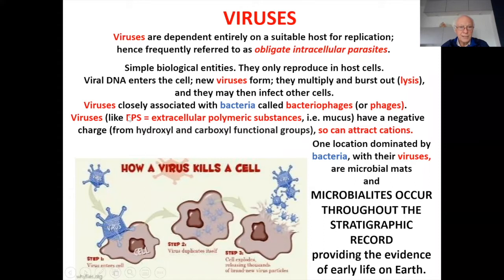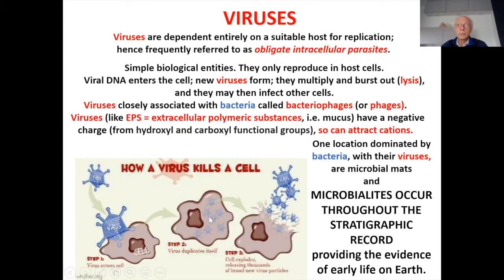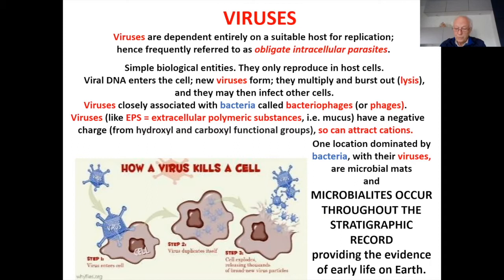The important thing about viruses — just like EPS (extracellular polymeric substance, that's mucus) — they have a negative charge from various hydroxyl and carboxyl groups. This means viruses can attract cations, which is very significant when it comes to precipitating minerals. One place where viruses will be present in huge numbers is where bacteria are well-developed — and that, of course, is in microbial mats. In microbial mats, we expect large numbers of bacteria, but we will also expect tens to hundreds more viruses.